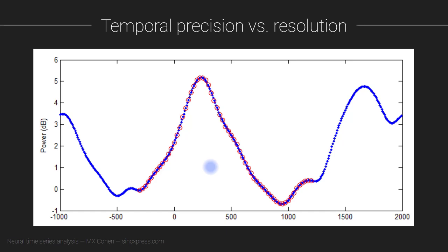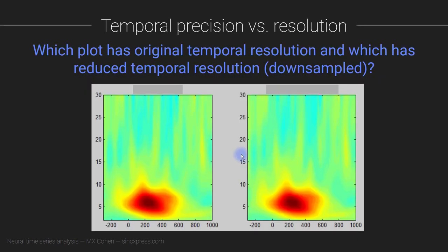So therefore, it's a good idea to down sample your results after wavelet convolution. What I want to show you here is two plots. One of these is at the full temporal resolution, and one of them has reduced temporal resolution. So the results were down sampled after the time frequency analysis was done. And I would like you to pause the video and figure out which one is the original and which one is down sampled.